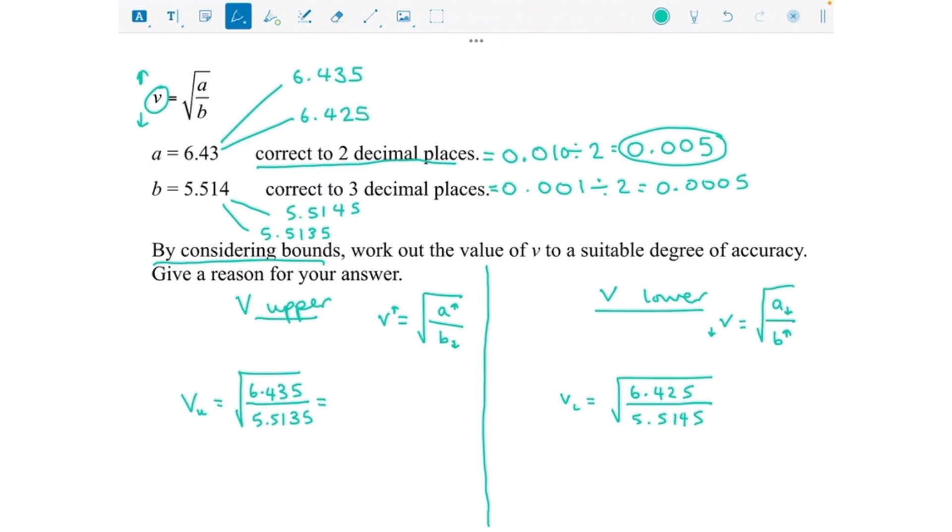Typing that in my calculator: square root and then fraction button, 6.435 over 5.5135, and that gives me an answer of 1.080340323. Really important at this stage that you write them all out.